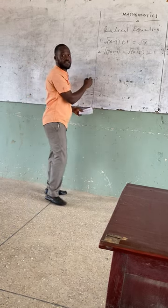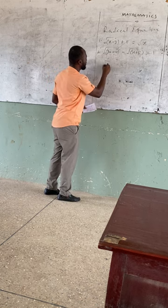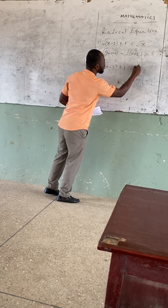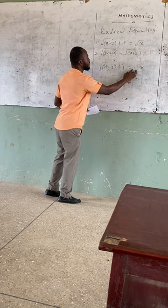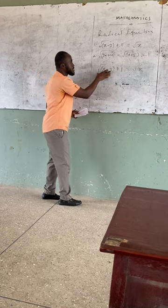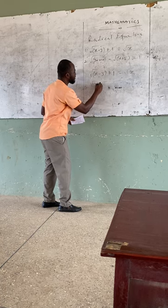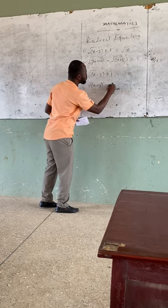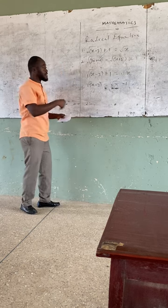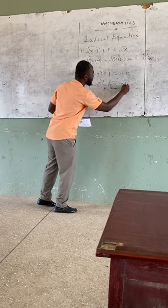Let's take the first example. The equation is: square root of x minus 3, plus 1, is equal to square root of x. I want to first isolate this radical, so I will keep it here and take the other terms to the other side. So I have: square root of x minus 3 is equal to square root of x minus 1. That is the first step. The second step says square both sides, so I will square here and square here.